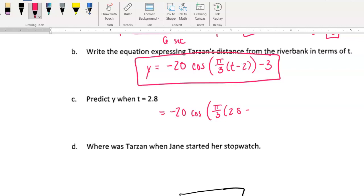Oops, 2.8, not 2.3. There we go. And literally, you would just type that in your calculator, making sure your calculator is in radian mode. The reason why is because we have the cosine of a value that's going to be in terms of π. So we want to use radian value. When you do that, you get negative 16.38. So that means after 2.8 seconds, he would be 16.38 meters overland from the riverbank.